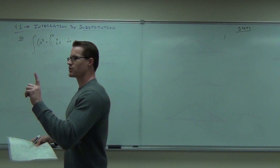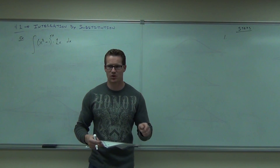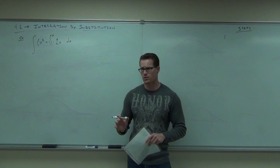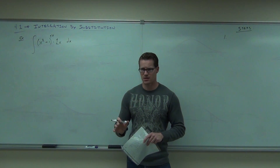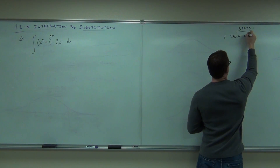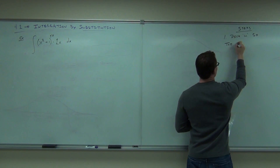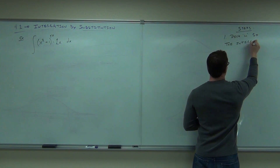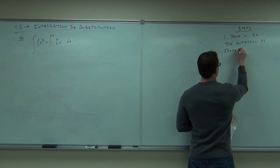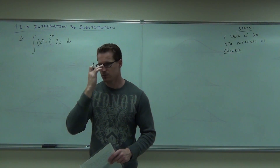Here's your steps. The first thing you're going to do is pick U so that the integral is easier. I know that's vague, but I'll give you some notes on that. You're trying to pick U so the integral is easier, not harder. Sometimes you'll pick the wrong U — it's okay, you'll know it in ten seconds or less. You can pick U so that it becomes harder, but you don't want to do that. You'll get stuck.